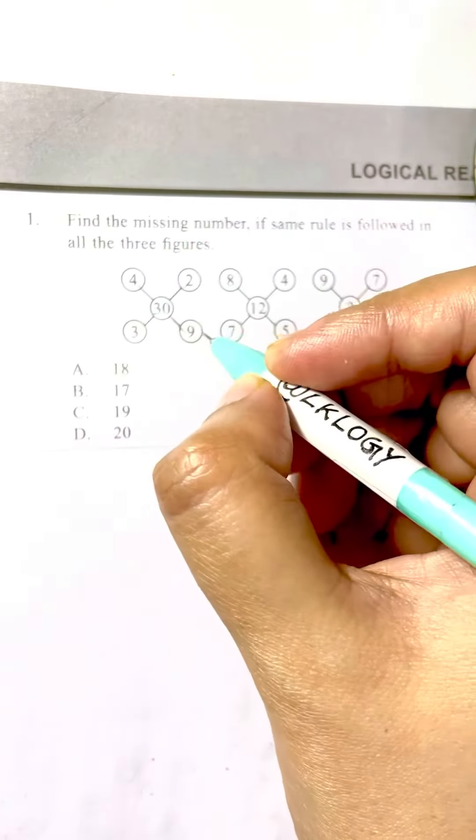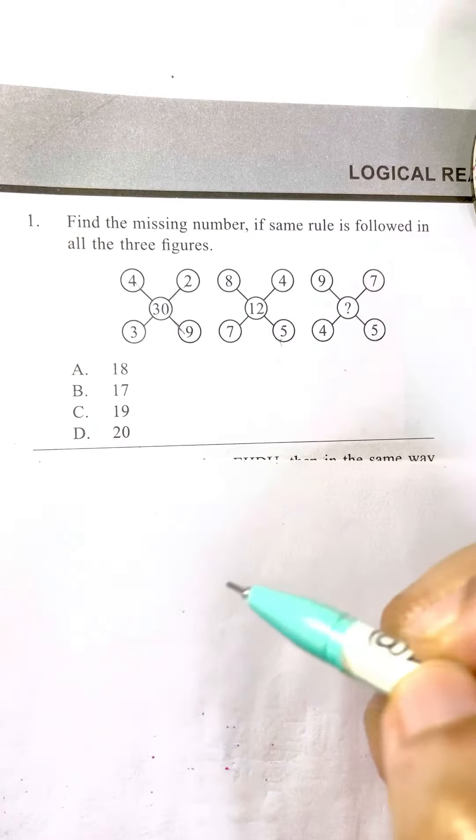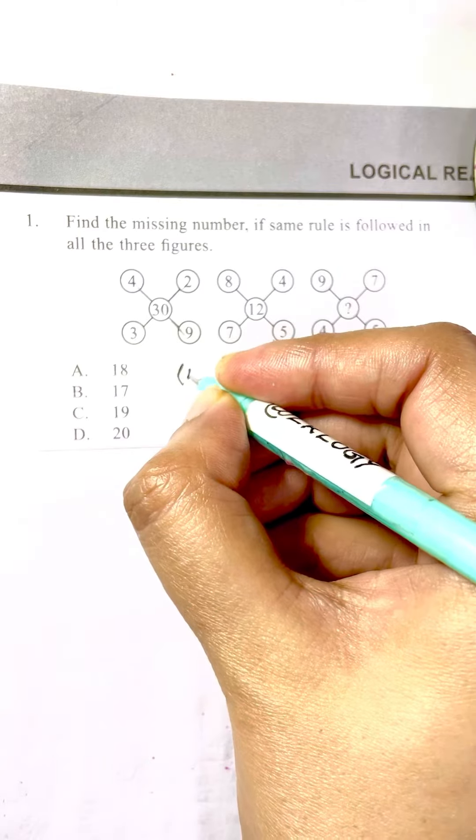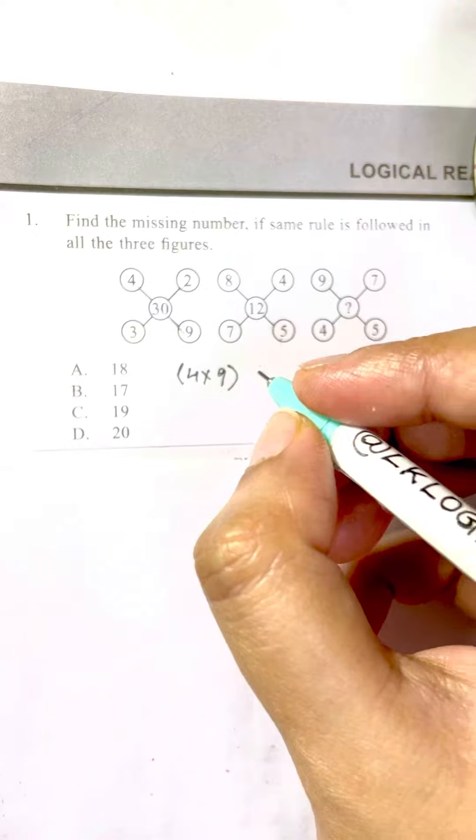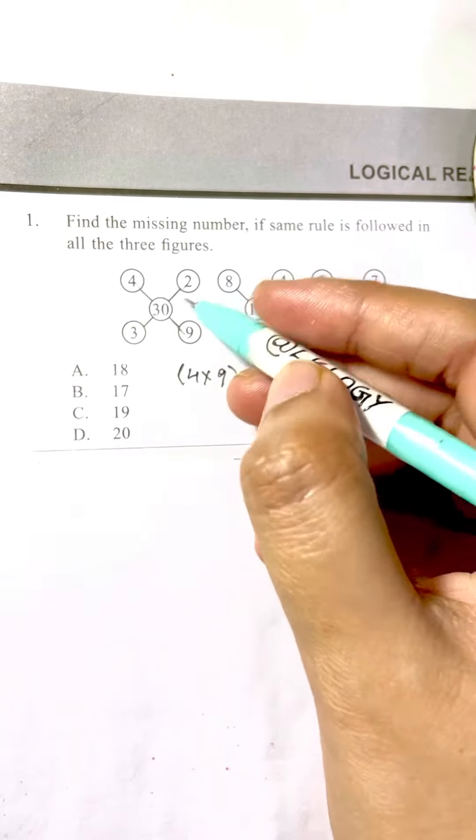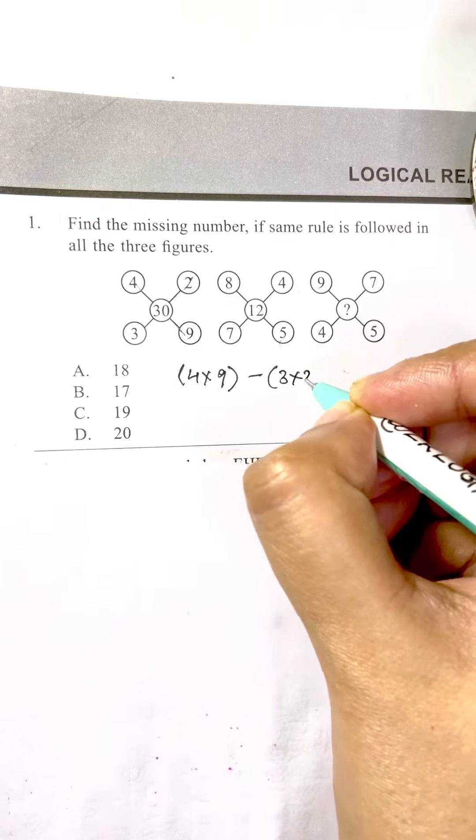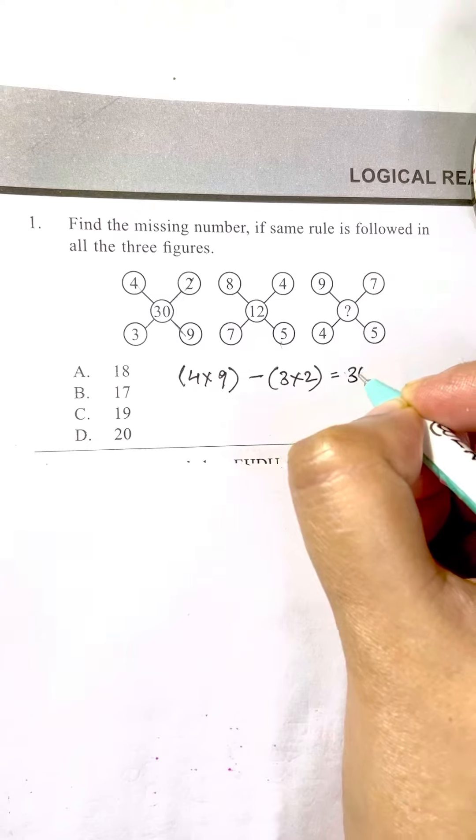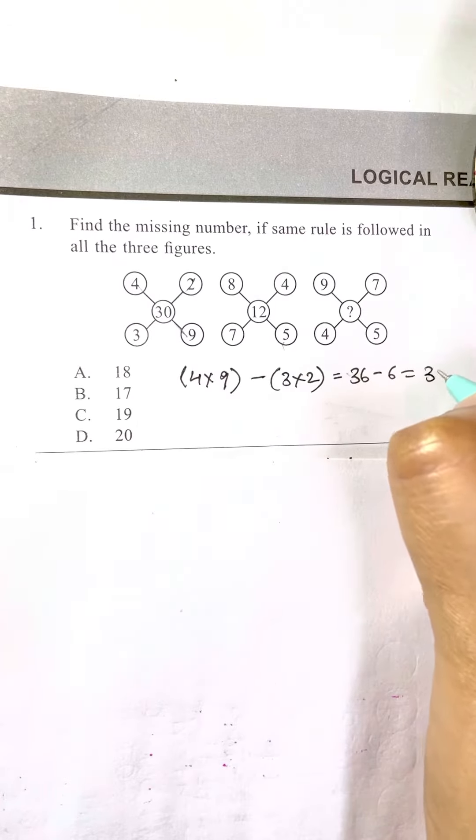First for this question, it's really useful for these kind of questions. I'm going to do four times nine. Four times nine is 36. Minus, I'm going to do this opposite way, three times two is six. Which is equal to 36 minus 6, and I'm going to get 30. That's the middle number that we have.